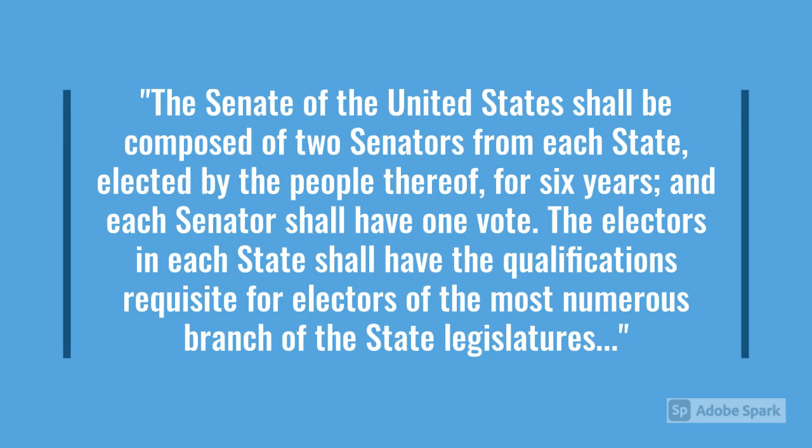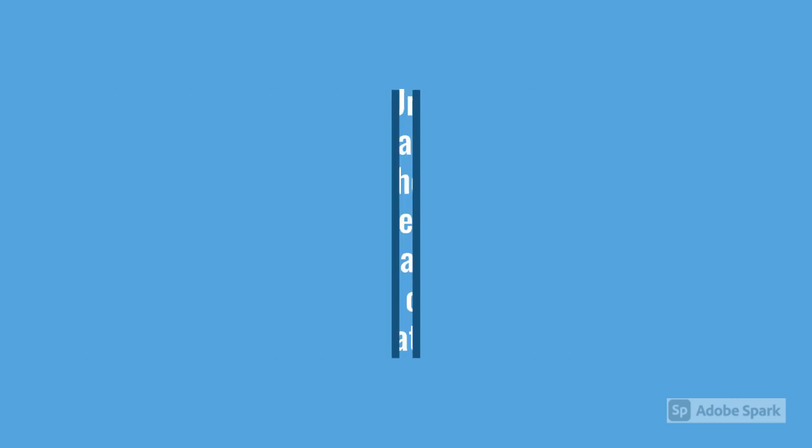The 17th Amendment says: The Senate of the United States shall be composed of two senators from each state, elected by the people thereof, for six years, and each senator shall have one vote. The electors in each state shall have the qualifications requisite for electors of the most numerous branch of the state legislatures.